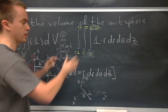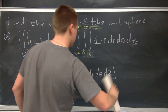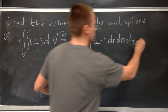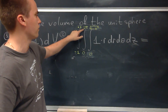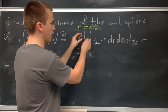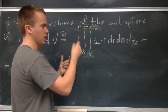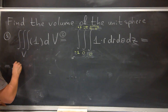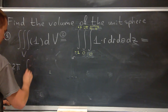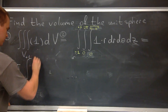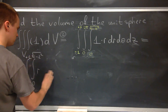We are done with step two, so we have our integral set up. For step three we just evaluate it. I can see that the function and bounds do not depend on θ, so by Fubini's theorem I can split the triple integral into a product of a single integral over θ and a double integral. The θ integral gives a factor of 2π, and I'm left with the integral from -1 to 1, from 0 to √(1 - z²), of r dr dz.